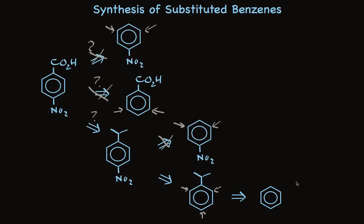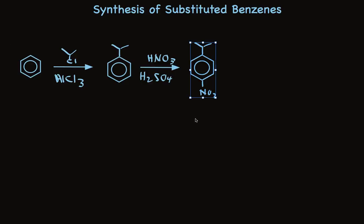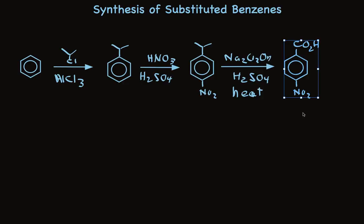What remains is to write out the details from start to finish. We'll use isopropyl chloride together with aluminum chloride to put the isopropyl group on. Then we can use nitric acid with sulfuric acid to nitrate at the para position. And to finish, we'll oxidize the alkyl group using dichromate, sulfuric acid, and heat. We've put only two groups on the ring, but it took three steps, because to get a carboxyl group on the ring we had to alkylate and then oxidize it.